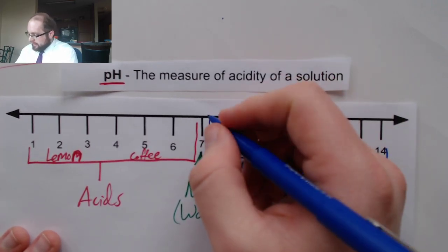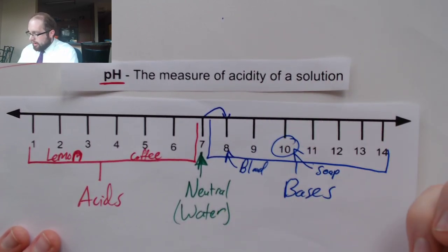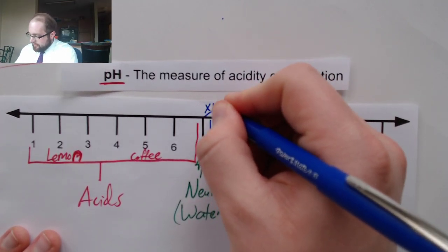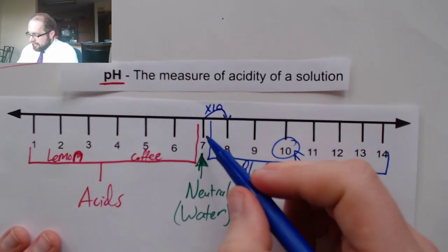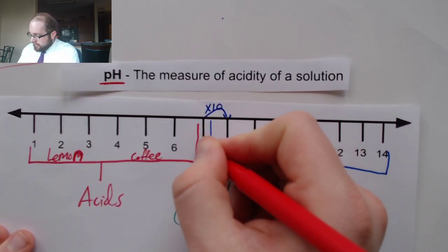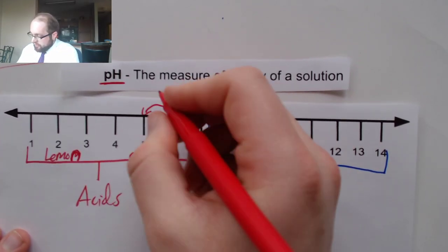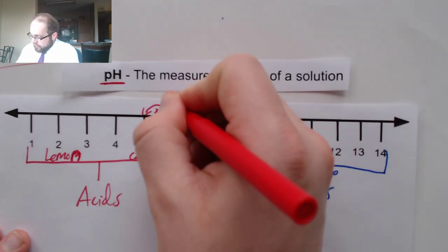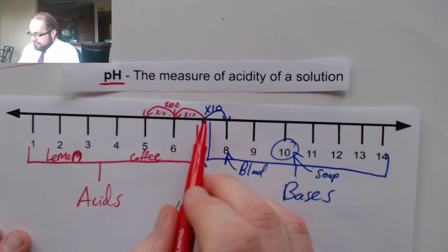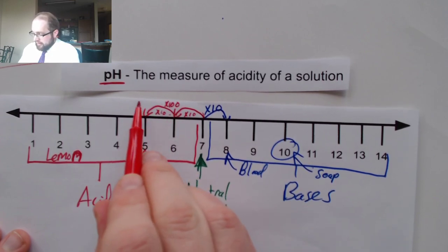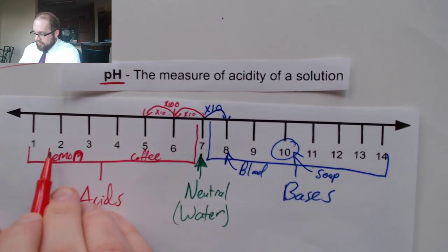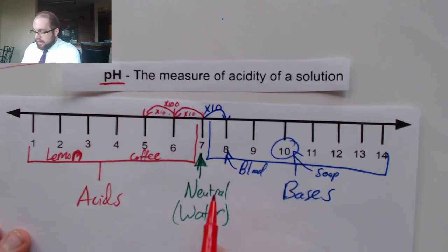Now when we look at these numbers, like the 7 to 8 here, pH is a logarithmic scale. So if I'm at pH 7 and then I go to pH 8, that is a change of times 10. Blood is times 10 more basic than water. If I do something like the neutral water to coffee, that is 2 times 10s. So that is times 100 altogether. So coffee is 100 times more acidic than water. You can even take this even further times 10, times 100, times 1000, times 10,000, times 100,000. The lemon juice is going to be 100,000 times more acidic than normal water.